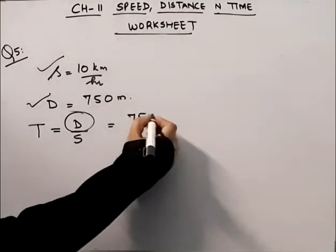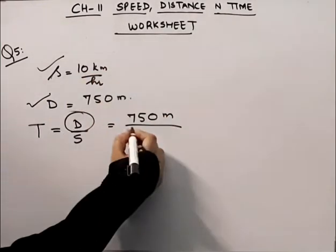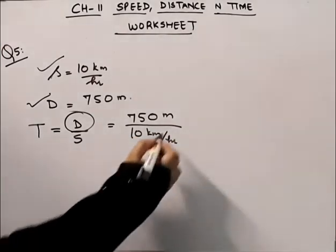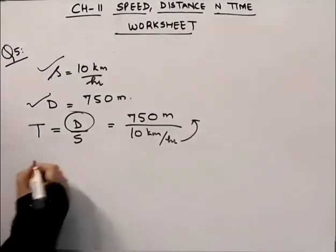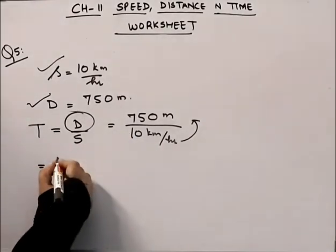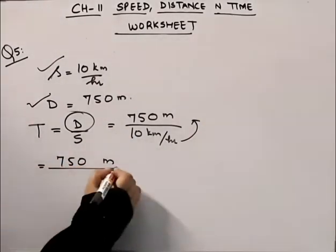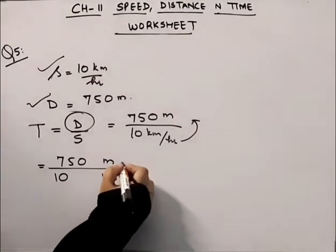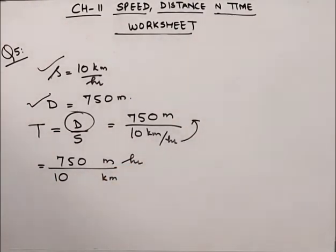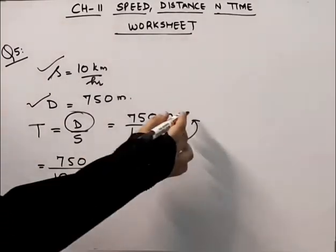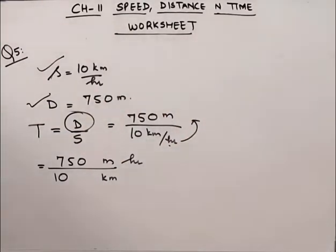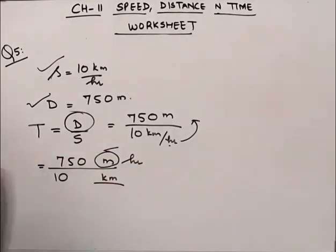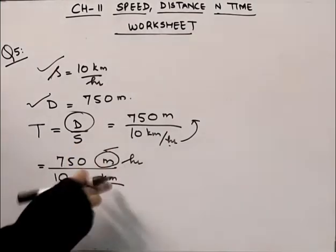Distance is 750 meters and the speed is 10 km per hour. So we have 750 meters divided by 10 km. The problem is we have the unit here as meters and here we have the unit as kilometers — two different units.